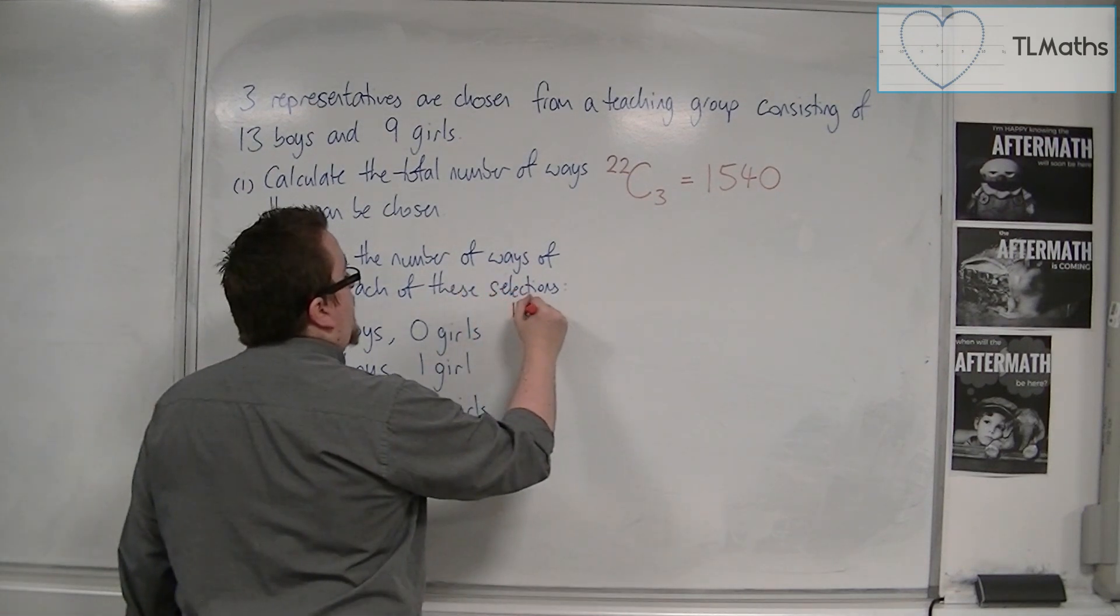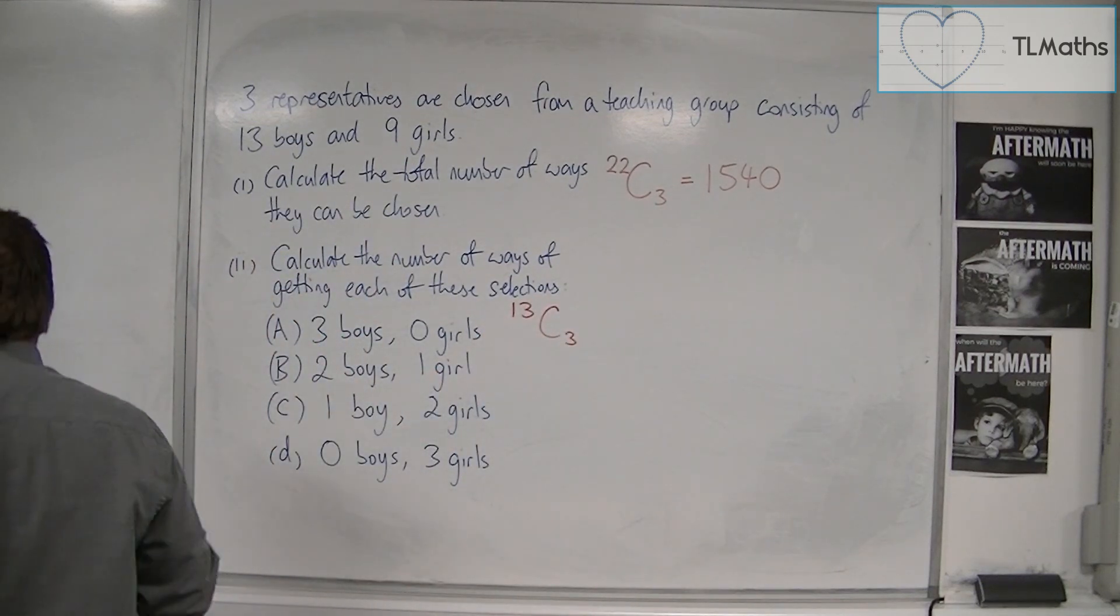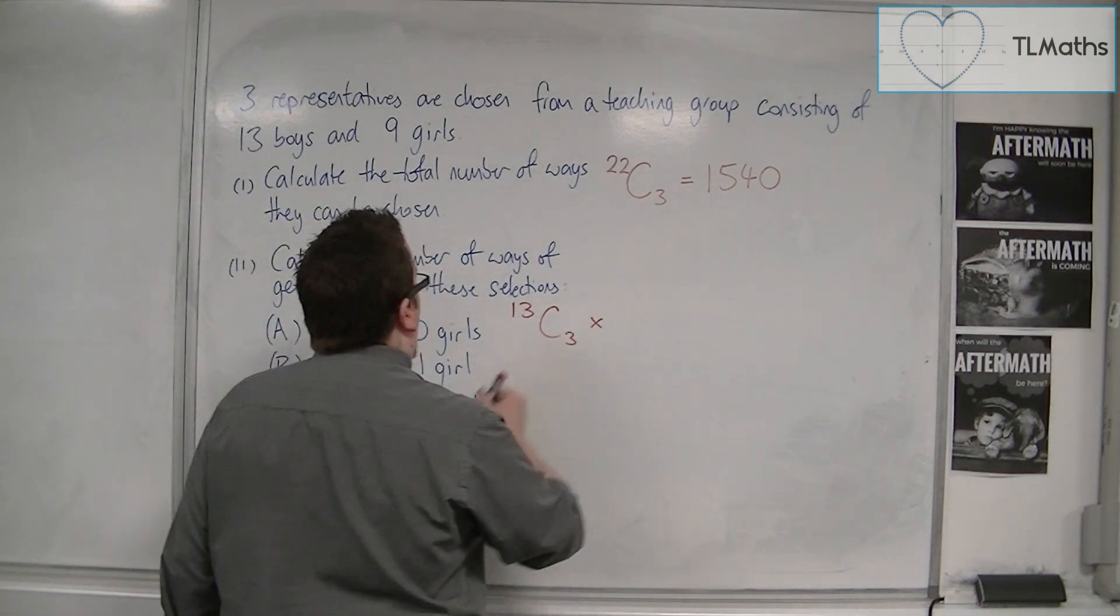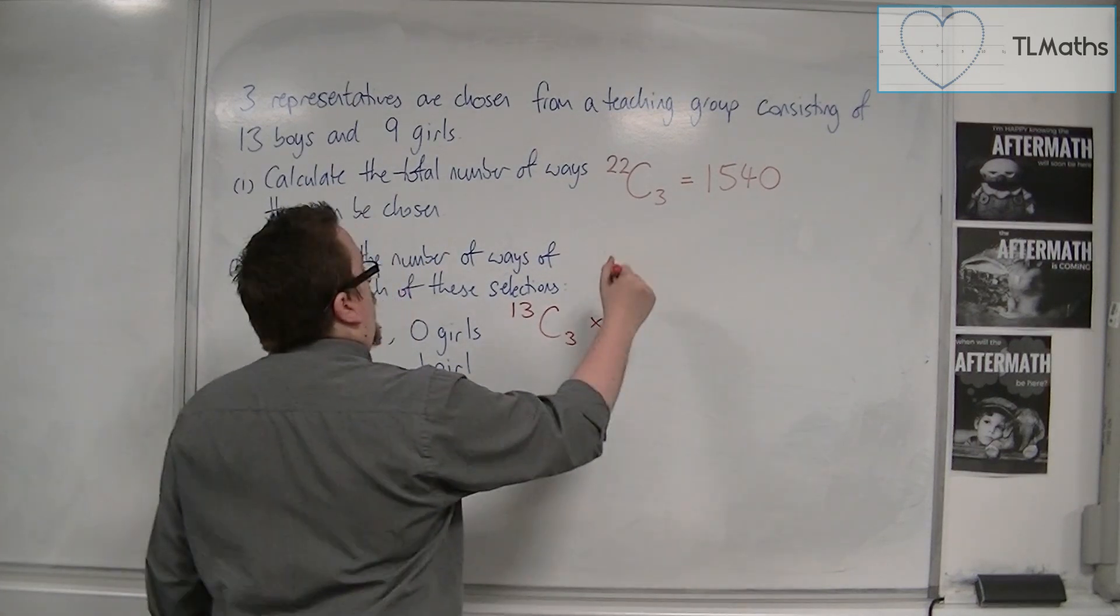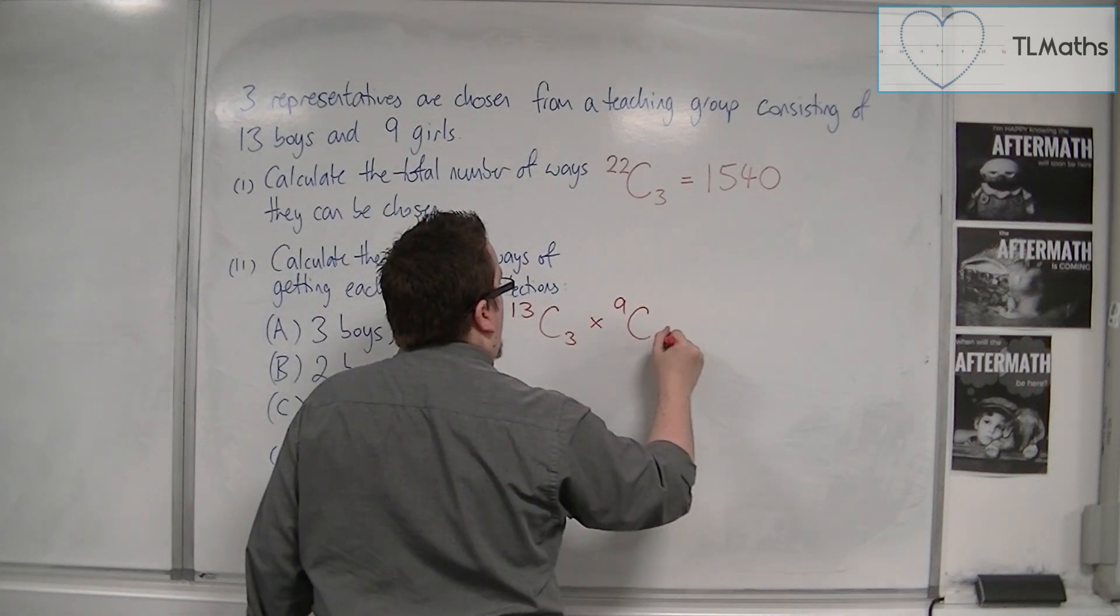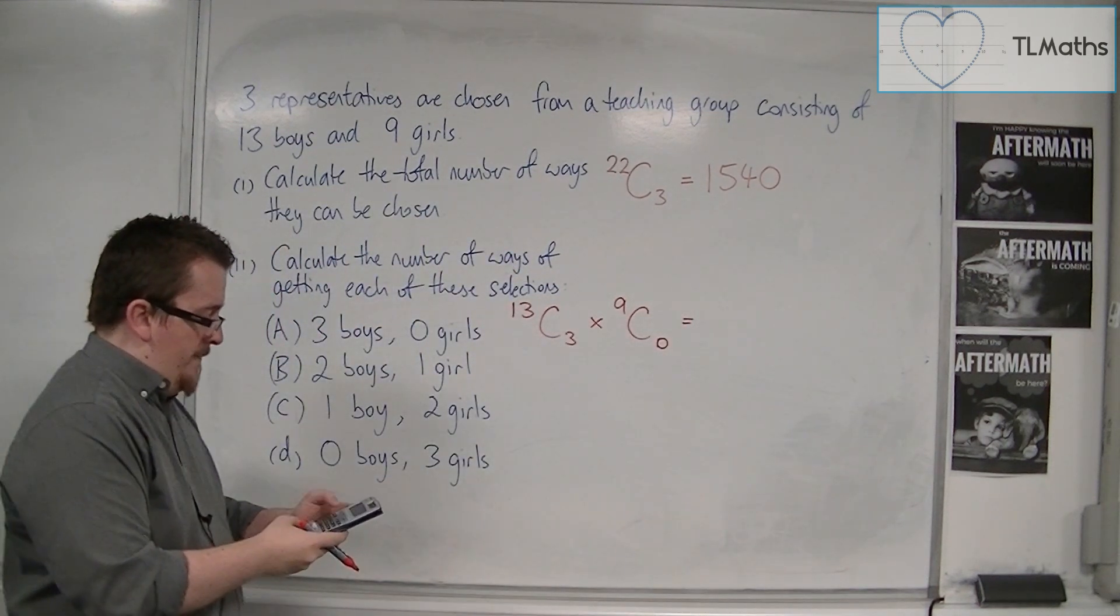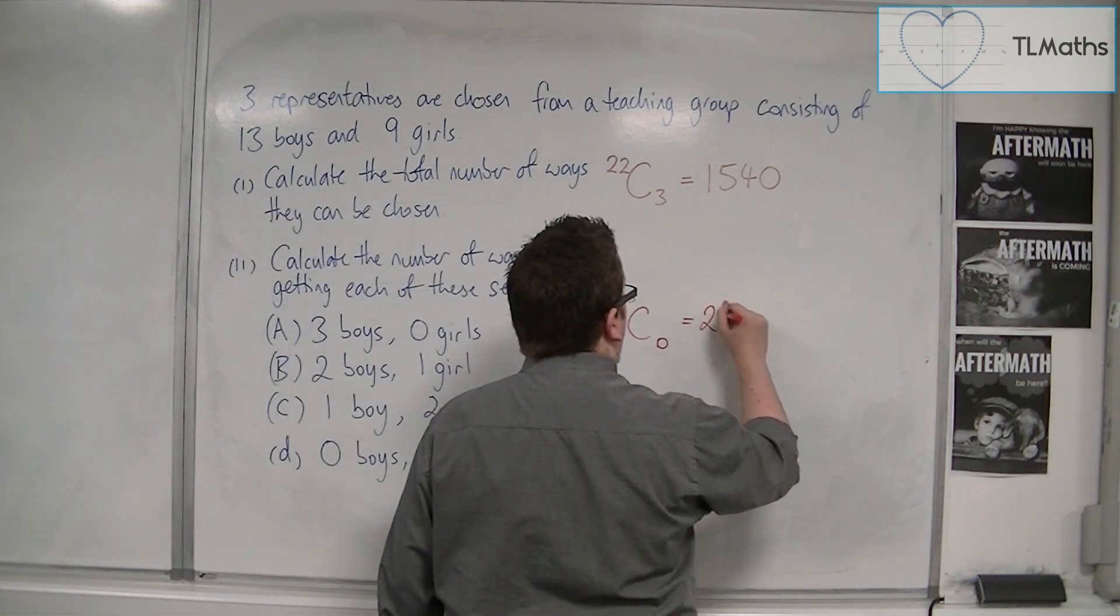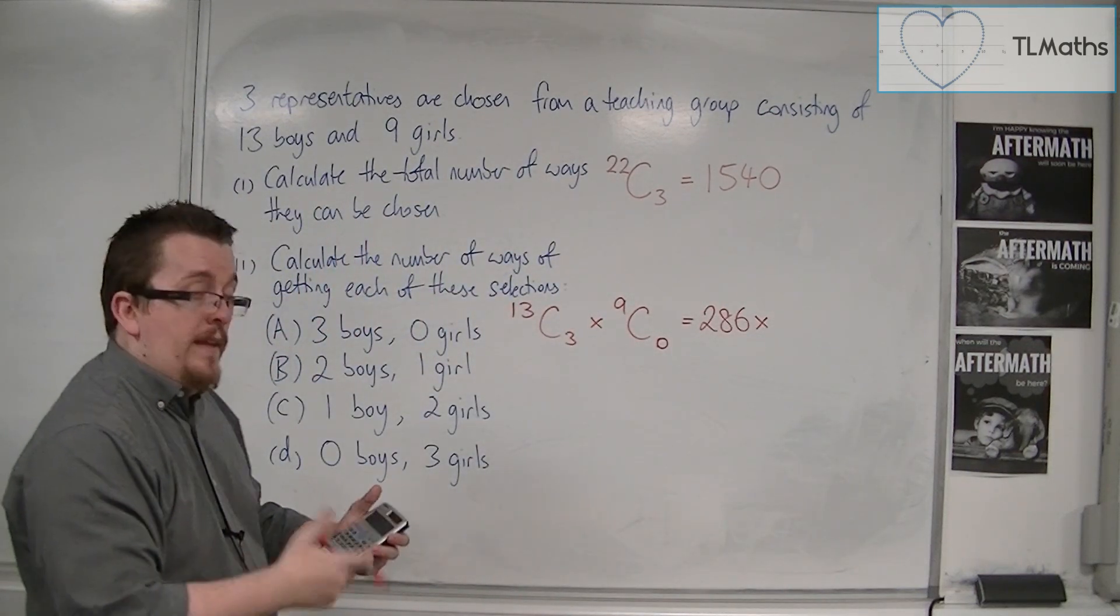And I would then multiply that by the number of ways that I can choose zero girls. So there are nine girls in total, and I want zero of them. So 13 choose 3 - 13 NCR 3 gets me 286, and 9 C0 is 1.